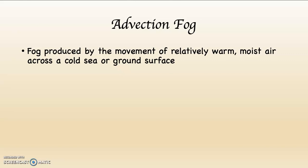By moist, I mean it has a high relative humidity — it's near saturation. By relatively warm, I mean this is in relationship to something else. 40 degrees is not warm, but it's warm compared to 30. There's a relationship, one in comparison to another. Advection fog is what in California we call our coastal fog, which is the vernacular name, but the real scientific name is advection fog.